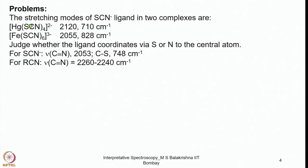To assign the linkage — whether S is connected to mercury or N is connected to mercury, and similarly for iron — we need information about free SCN. The free SCN stretching frequencies are: C≡N stretching at 2053 cm⁻¹ and C-S at 748 cm⁻¹. For reference, isocyanate C≡N resonates around 2060 cm⁻¹ and can range from 2060 to 2240 cm⁻¹ depending on the R groups.